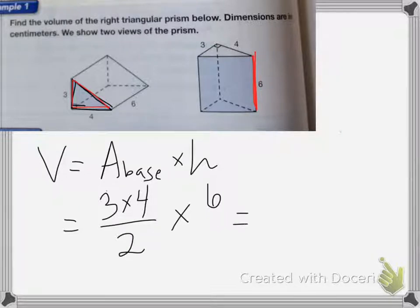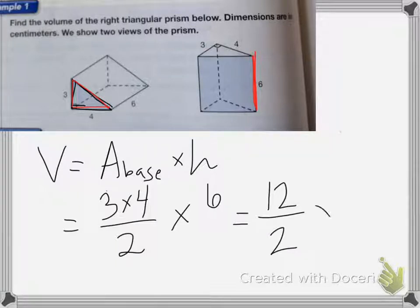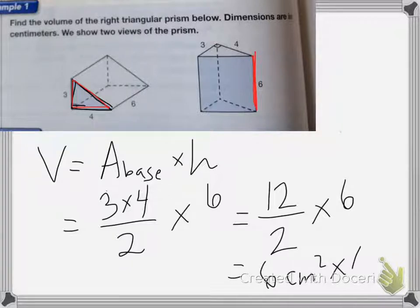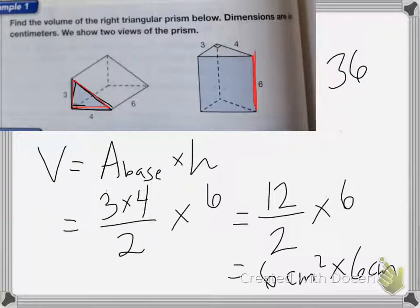So 3 times 4 is 12, divided by 2, times 6. I end up with 6 centimeters squared times 6 centimeters, which is equal to 36 centimeters cubed.